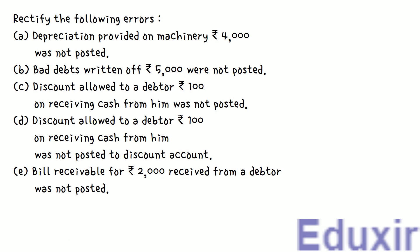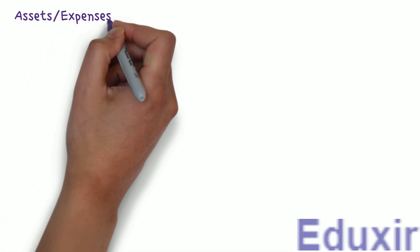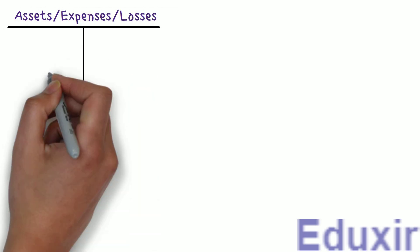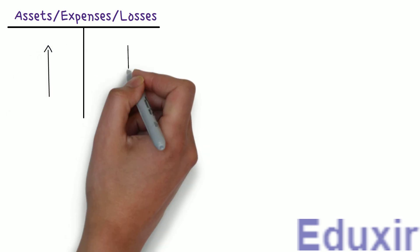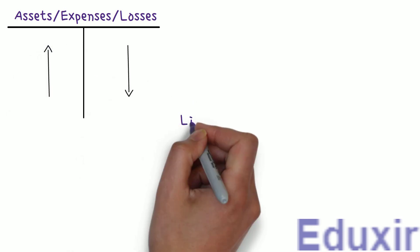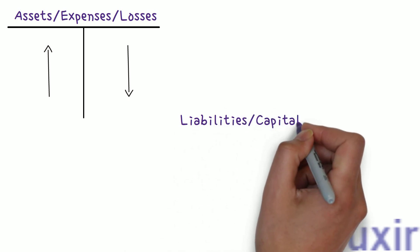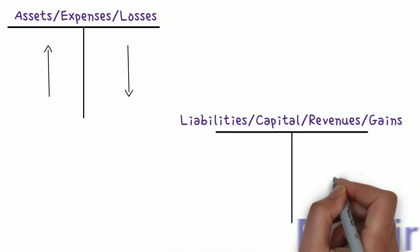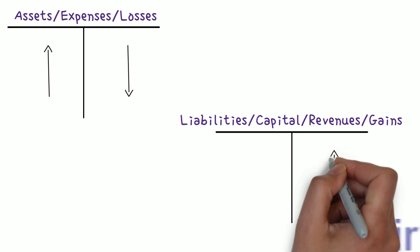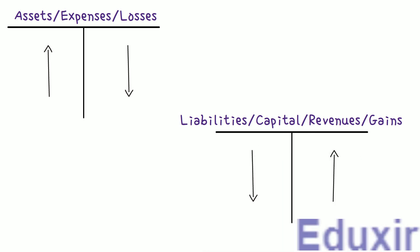Before we proceed with the analysis of these errors, let us first do a small recap. In case of assets, expenses, or losses, any increase should be debited and any decrease should be credited. Most of the errors given in the problem are simply errors of omission — that is, a transaction was totally or partially not posted. To rectify this kind of error, we will simply enter the transaction that will take care of it.